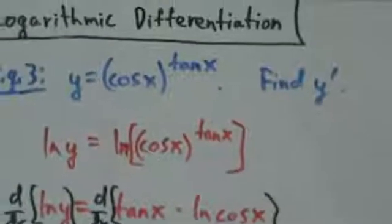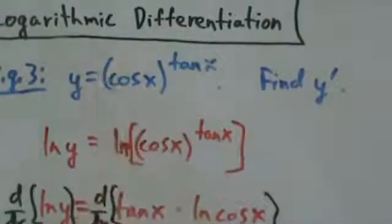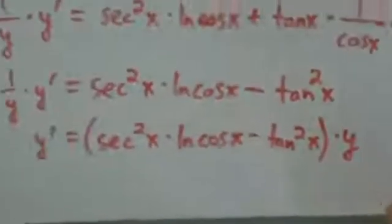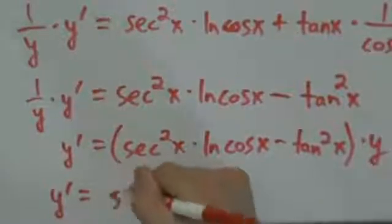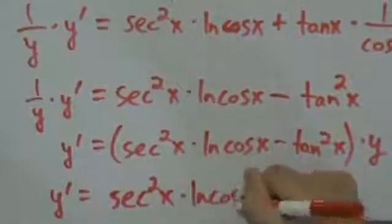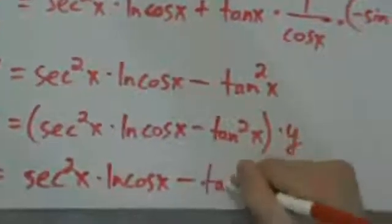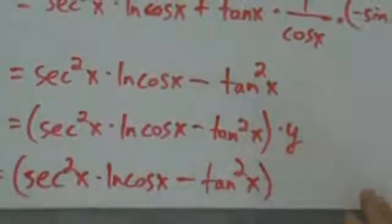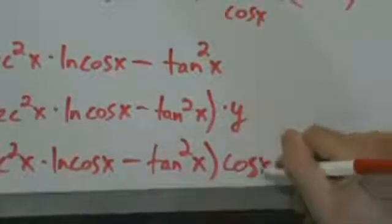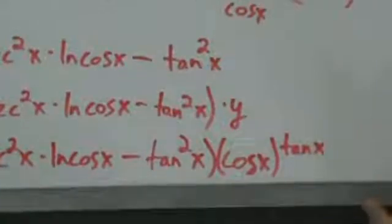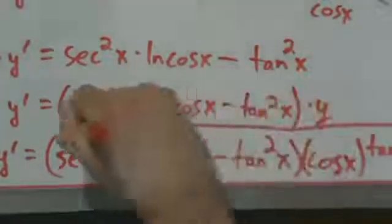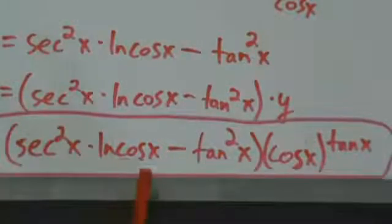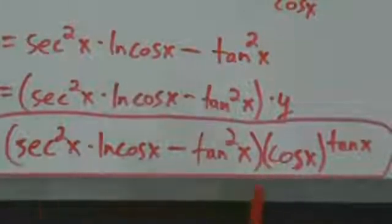We go back to the beginning and remember that y is this function of x, so we substitute it back in. That gives us y prime equals secant squared of x times natural log of cosine of x minus tangent squared of x — parentheses around all of that — multiplied by y, which is cosine of x to the tangent of x. So cosine of x to the tangent of x. And that is our derivative.